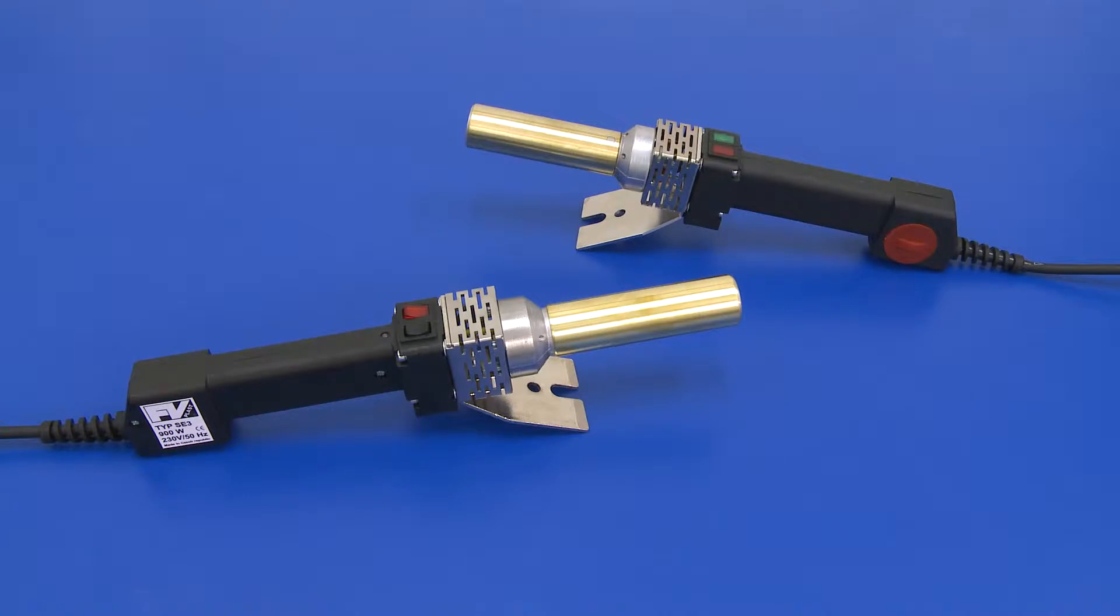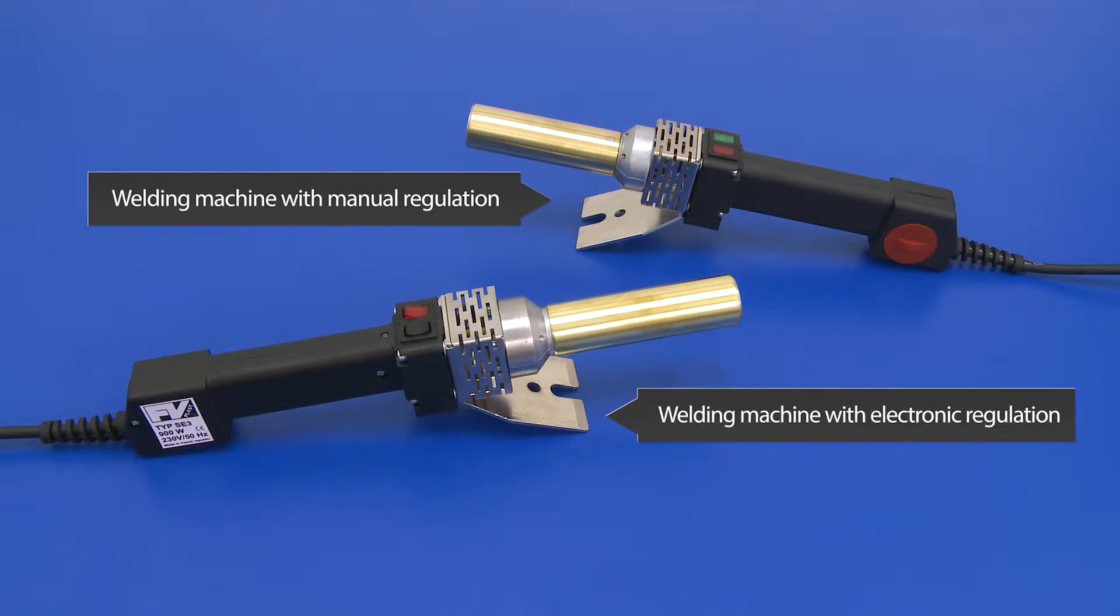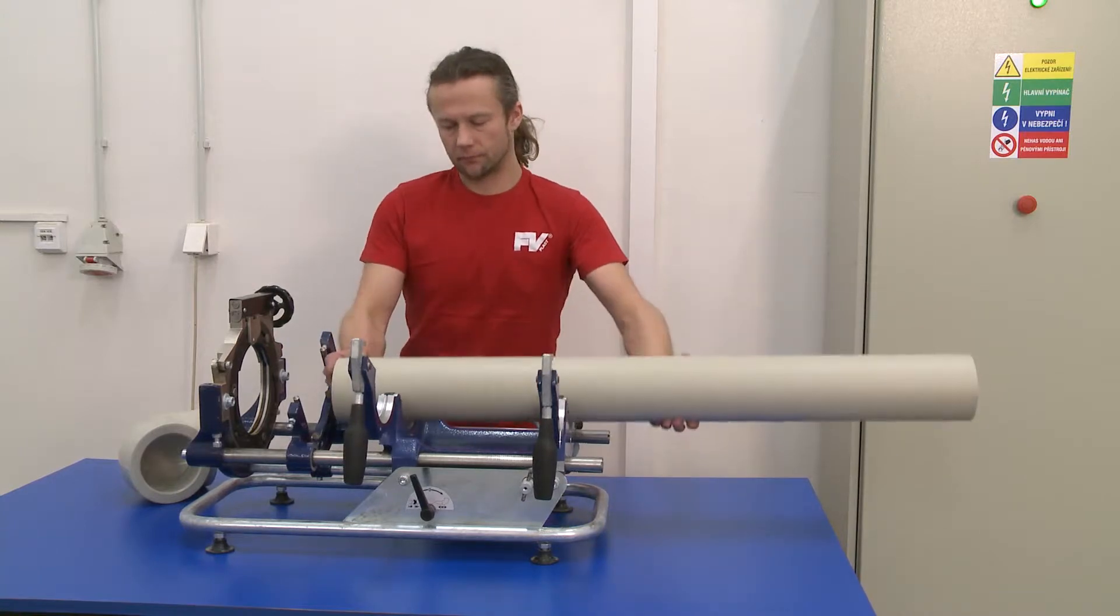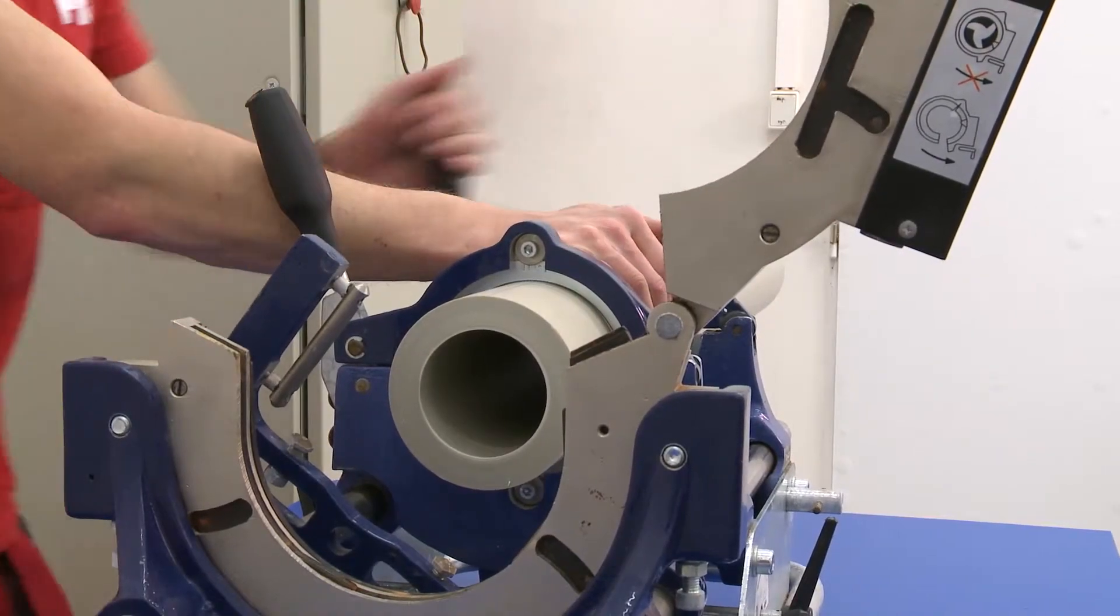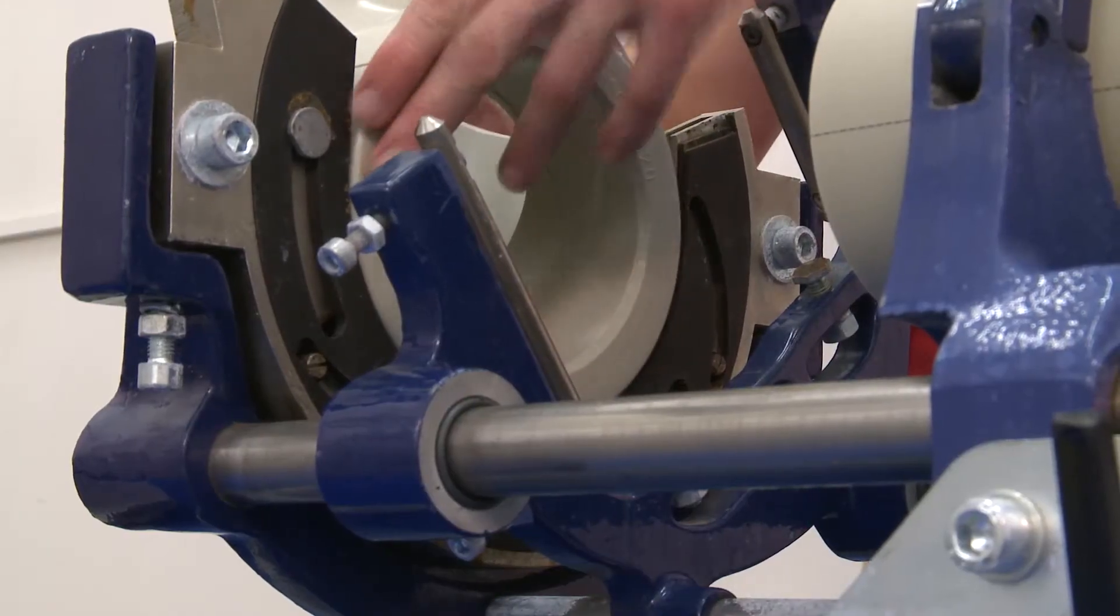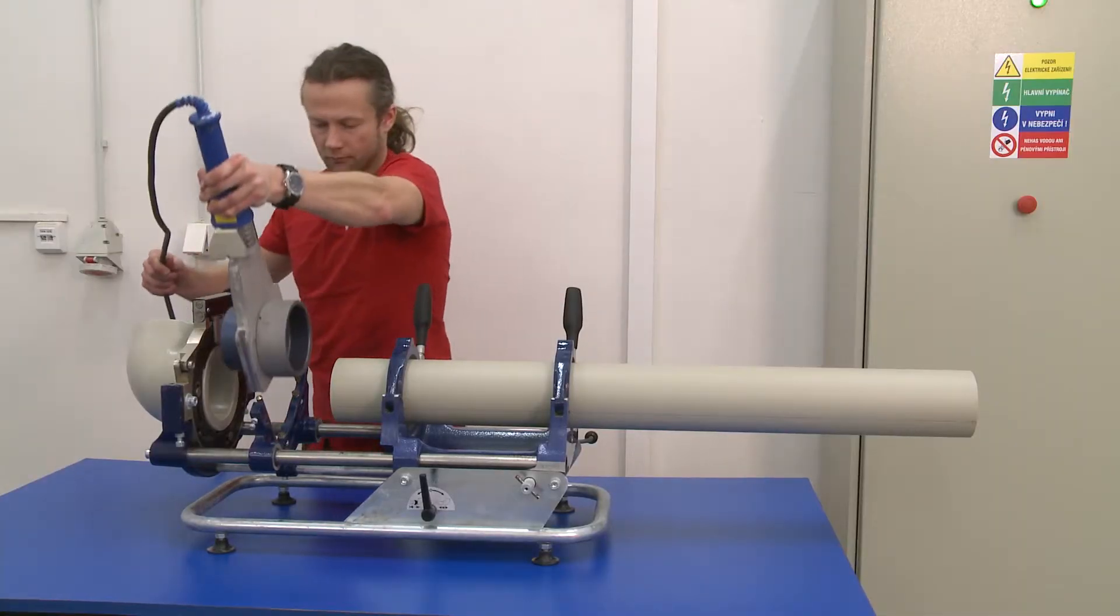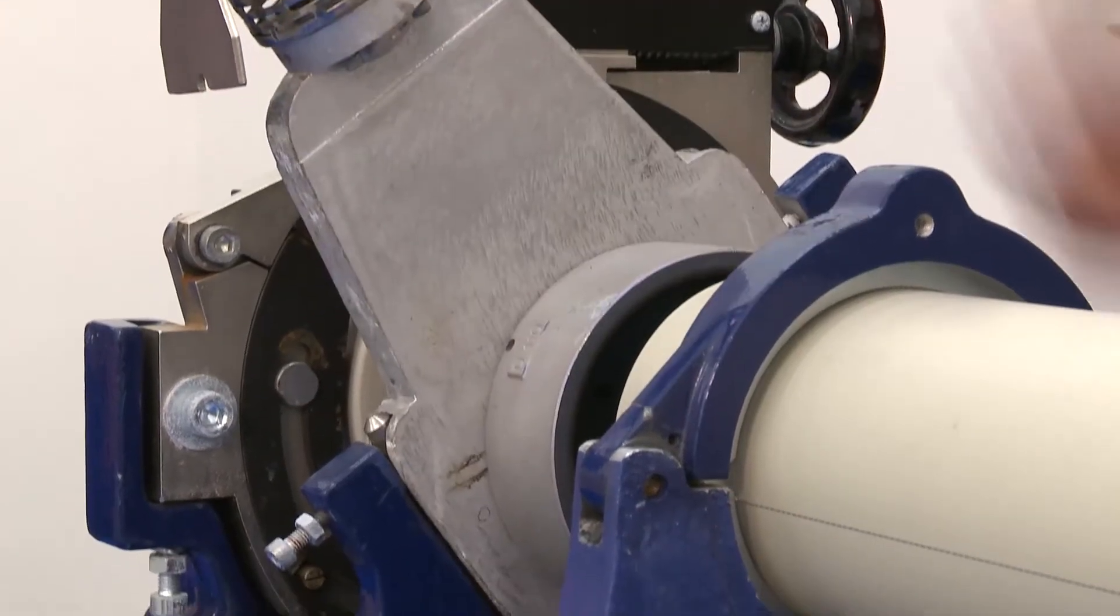Welding of smaller profiles up to 40mm can be easily performed by hand using a welding machine with manual or electronic control. For welding large diameter it is recommended to use welding equipment which we will be happy to lend. It is recommended to weld large profiles in a clean environment, preferably in a workshop.